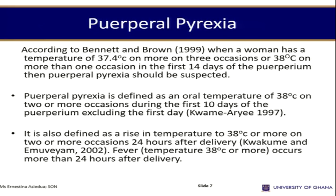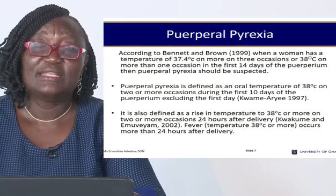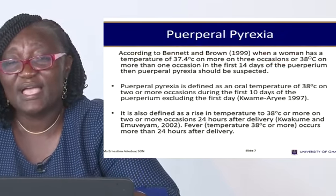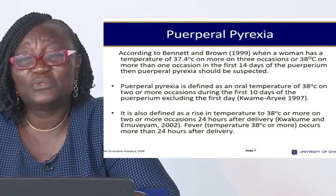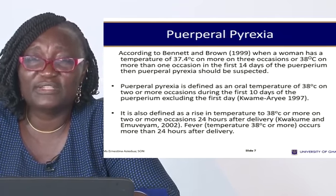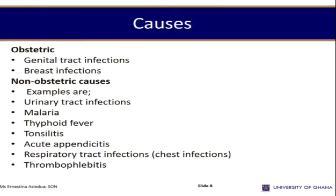Puerperal pyrexia is also defined as a rise in temperature to 38 degrees or more on two or more occasions 24 hours after delivery. Sometimes immediately after delivery, there may be a physiological rise in temperature. We are talking about puerperal pyrexia when temperature reaches 38 degrees or more after the first 24 hours. Many conditions can lead to increased temperature during the puerperium.